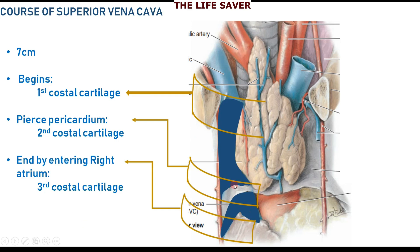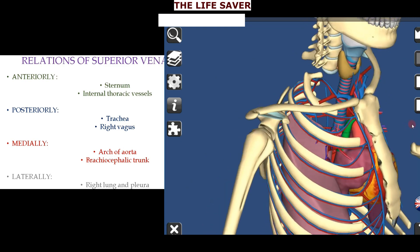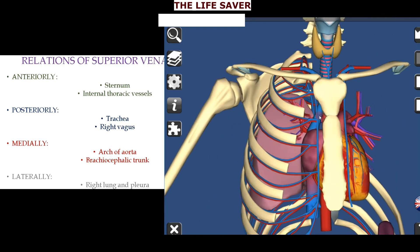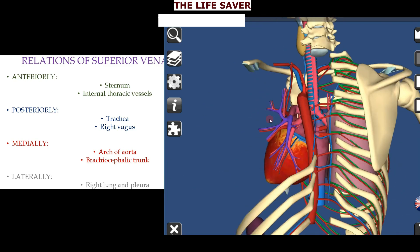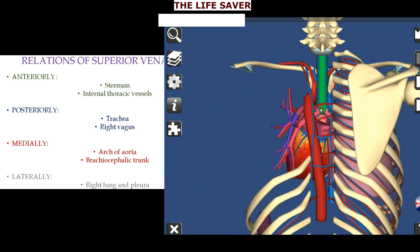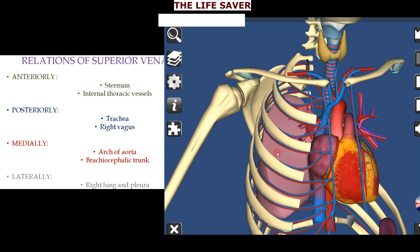Now we are going to discuss the relations of the Superior Vena Cava. Anteriorly, there is the sternum with the manubrium sterni and the internal thoracic vessels. Posteriorly, there is the trachea and the right vagus nerve. Medially, there is the arch of aorta along with the brachiocephalic trunk. Laterally, there is the right lung along with the right phrenic nerve.